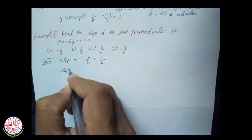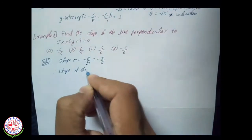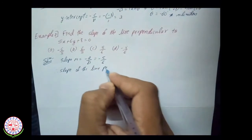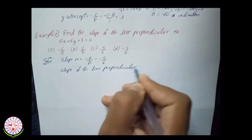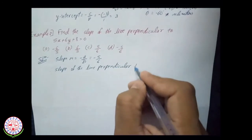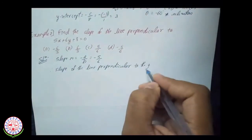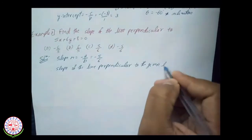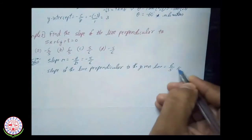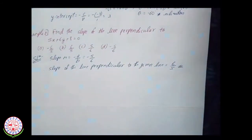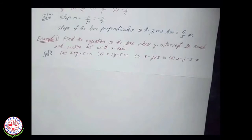Therefore, what is the slope of the perpendicular line? The slope −5/6 is the slope of the given line; we want the perpendicular slope. The perpendicular slope is the negative reciprocal: −1/m, which gives us +6/5.